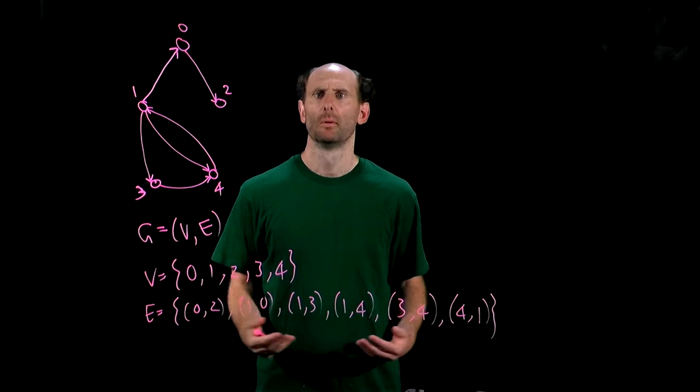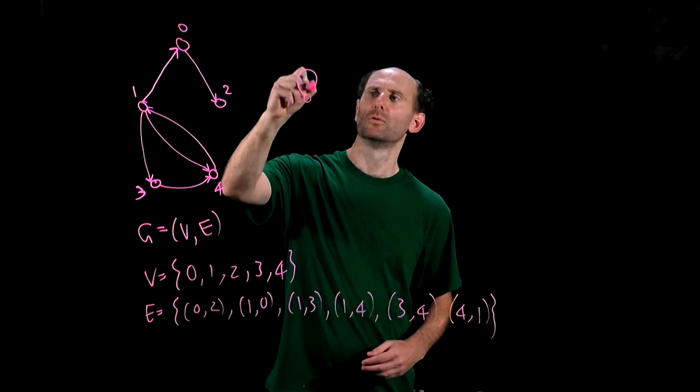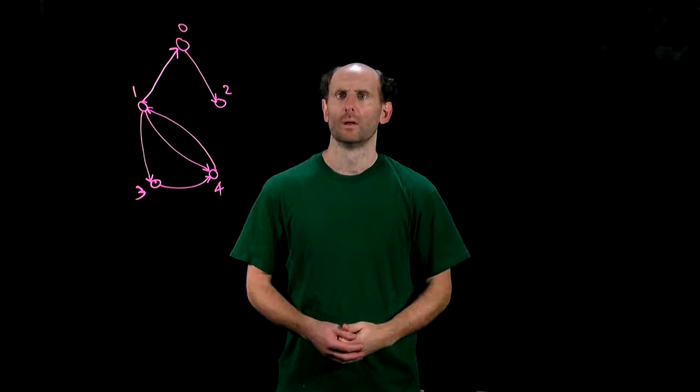We will also assume that none of our graphs or digraphs have loops. So if we have a node U like this, we can't have an arc that goes from U to U. We'll disallow those. If we have an arc going from a node U to a node V,